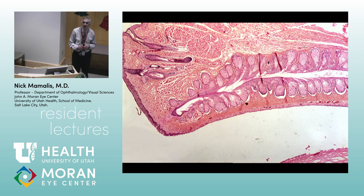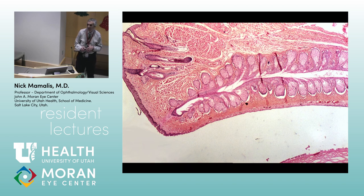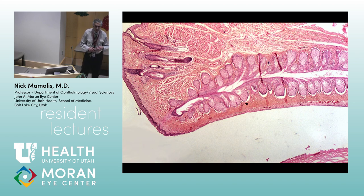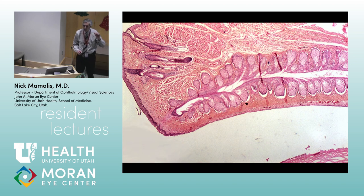How is the tarsal plate different in primates compared to lower animals? It doesn't have cartilage. If you do surgery on rabbits or rats, the eyelid is really tough — it has cartilage. Primates do not. So we don't have cartilage; it's a dense fibrous connective tissue. When you flip a human eyelid it really gives body to it — it's pretty dense connective tissue.